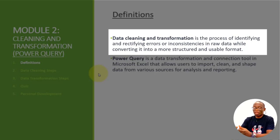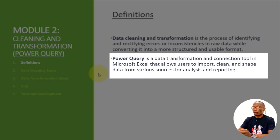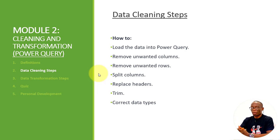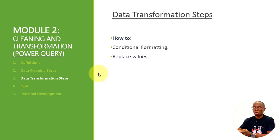Data cleaning and transformation is a process of identifying and rectifying errors or inconsistencies in raw data while converting it into a more structured and usable format. The tool we will use is called Power Query. Power Query is a data transformation and connection tool in Microsoft Excel and Power BI that allows users to import, clean, and shape data from various sources for analysis and reporting. In this section, we'll look at how to load data into Power Query, remove unwanted columns, remove unwanted rows, split columns, replace headers, trim, and correct data types. In the transformation steps, we'll look at conditional formatting and how to replace values.